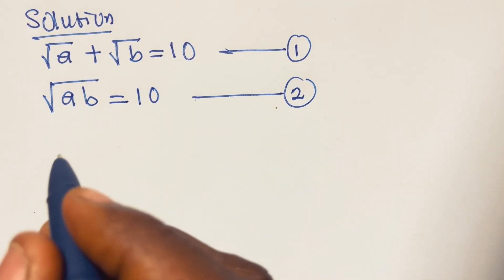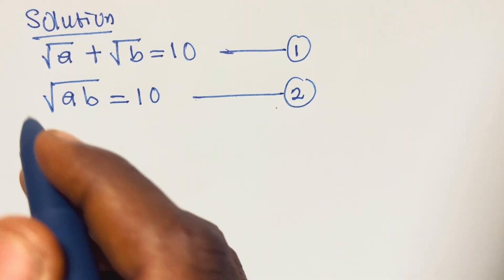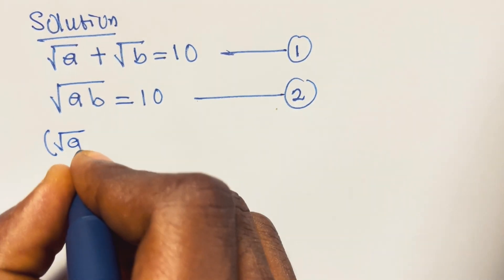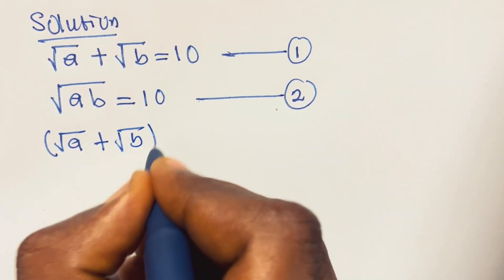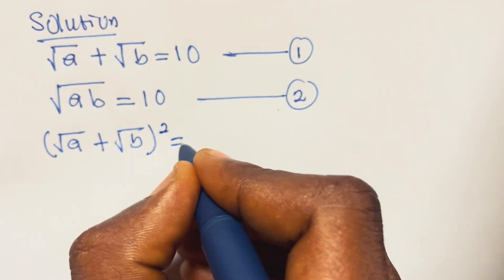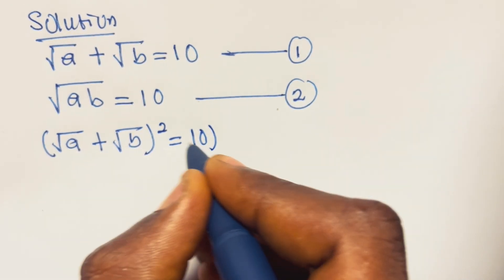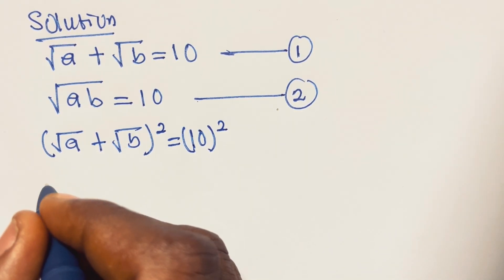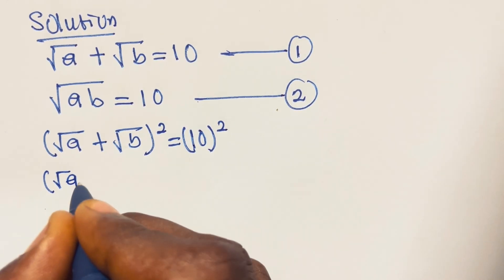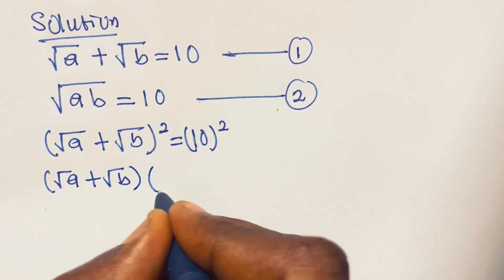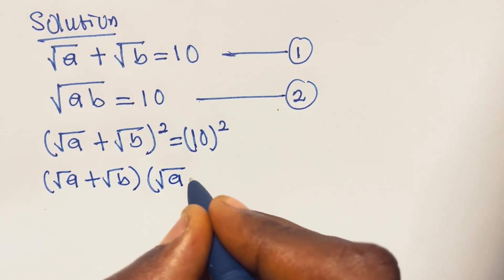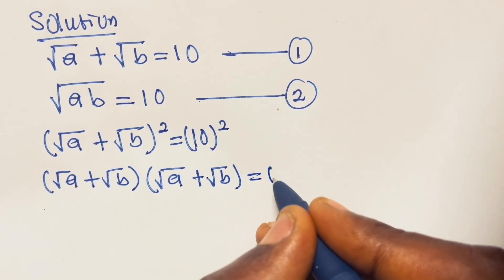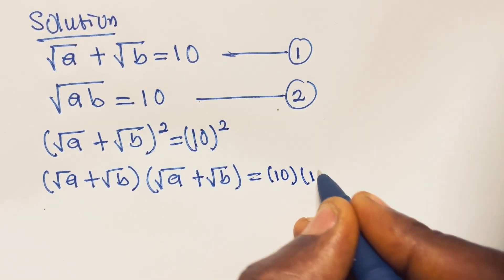From here we square both sides of equation 1. If we square both sides of equation 1 we have: square root of a plus square root of b, all squared, equals 10 squared.